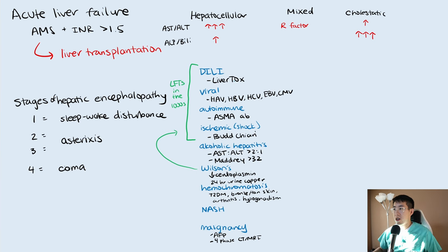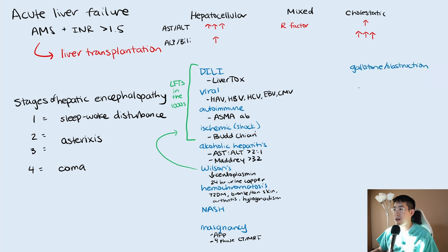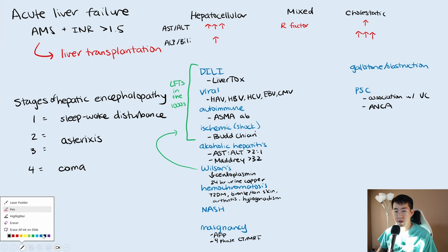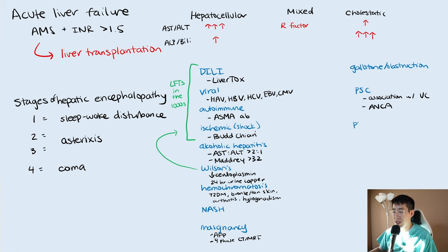For alcoholic hepatitis, if you ever see the AST or ALT greater than 500, it almost rules out that diagnosis. Now, for the cholestatic differential: the most common cause in healthy patients would be gallstone disease or obstruction. If you have a middle-aged man with a history of bloody stools, you'd think of primary sclerosing cholangitis, mainly because of its association with ulcerative colitis and ANCA serologies.